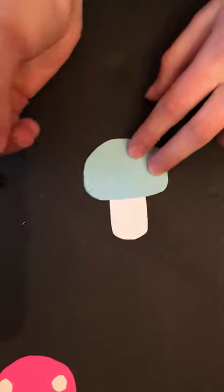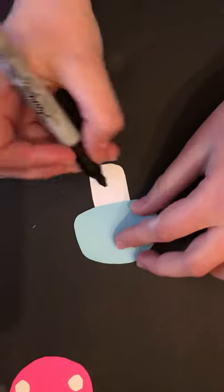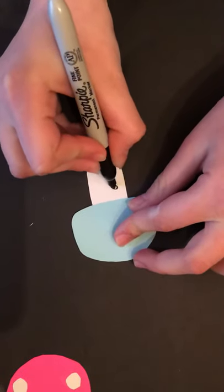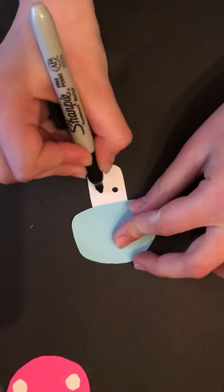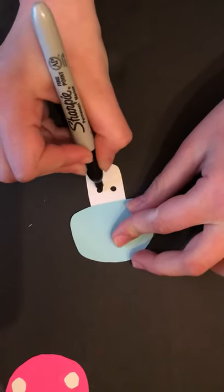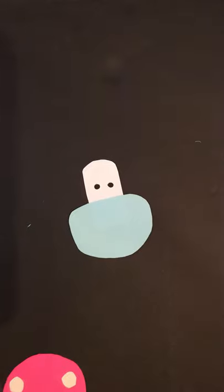Now take your sharpie marker and you're going to make your eyes. So just make small circles. You don't even have to make the eyes on it. So just do whatever you would like. Then you can make your mouth.